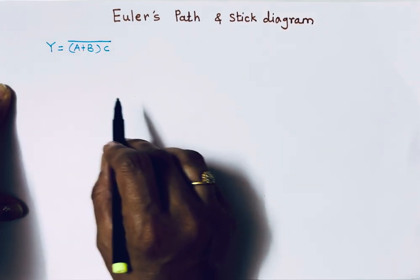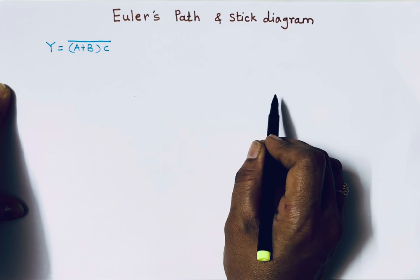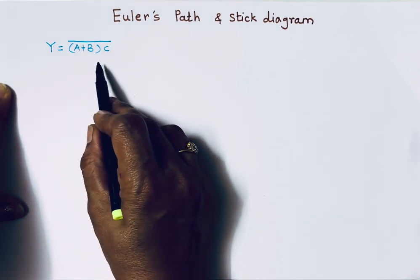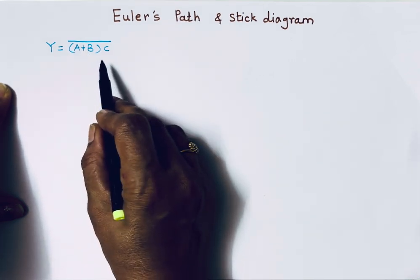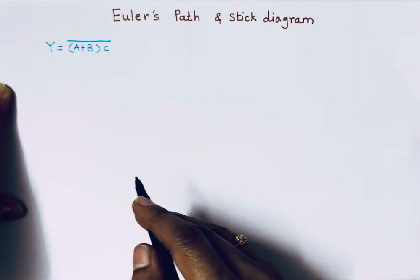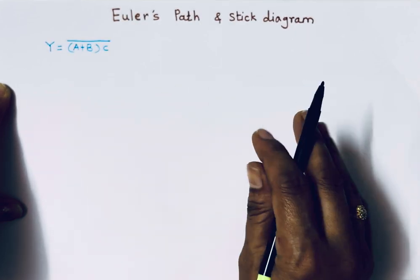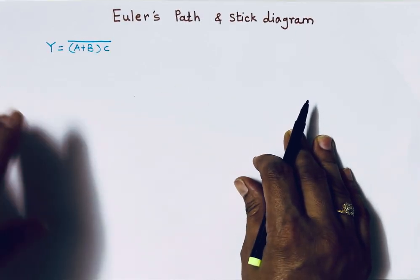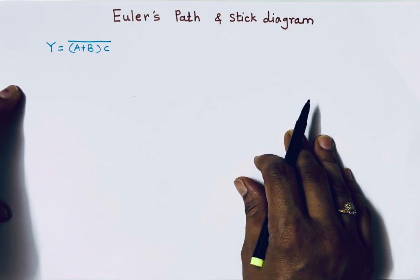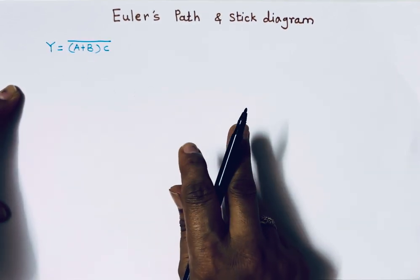I have prepared a separate video regarding the implementation of combinational circuits using MOSFETs, where I explained everything about pull-up network, pull-down network, NMOS, PMOS, and when to connect them in series or parallel. Here, to keep the length of this video short, I will simply tell you two important rules.